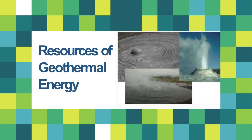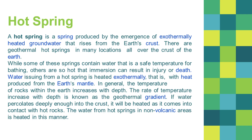Resources of geothermal energy — Hot Springs: a hot spring is produced by the emergence of exothermally heated groundwater that rises from the earth's crust. There are geothermal hot springs in many locations all over the earth's crust; while some contain water safe enough for bathing, others are so hot that immersion can result in injury or death. Water issuing from a hot spring is heated with heat produced from the earth's mantle. The temperature of rocks within the earth increases with depth, known as the geothermal gradient. If water percolates deeply enough into the crust, it is heated upon contact with hot rocks.